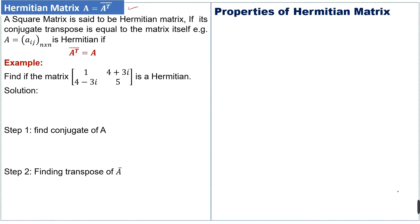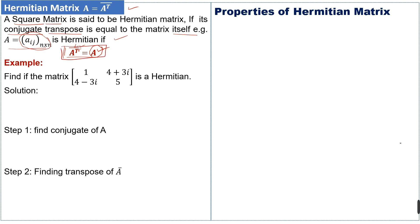Hermitian matrix. A square matrix is said to be a Hermitian matrix if its conjugate transpose is equal to the matrix itself. For an n×n square matrix A, it is Hermitian if the conjugate transpose of A is equal to A — first we take the conjugate of the matrix, then we take the transpose, and if the result equals the original matrix, it is Hermitian.